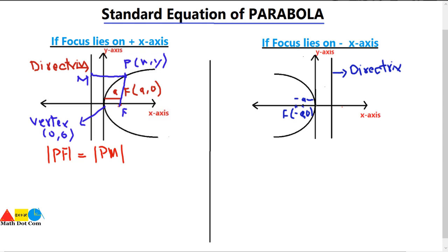This distance can be found using the distance formula. For PF, we use the distance formula: the square root of (x minus A) squared plus (y minus 0) squared. This gives us the distance PF.